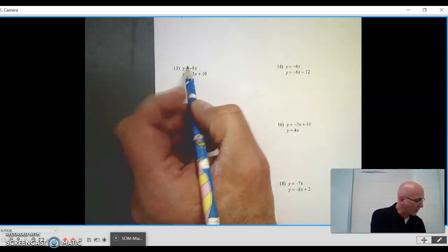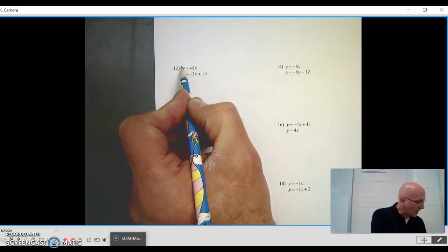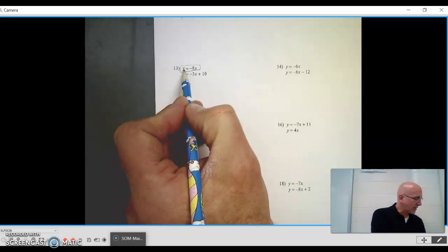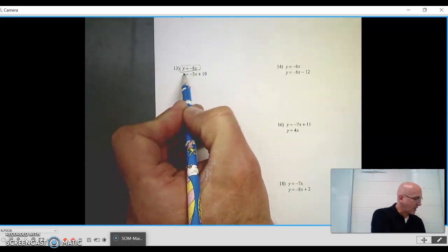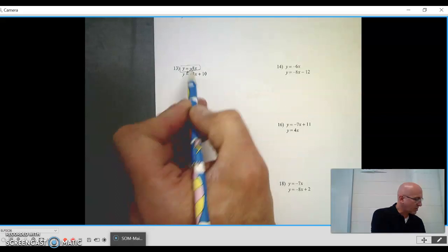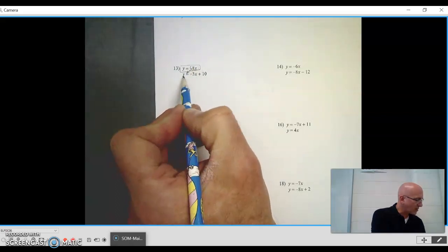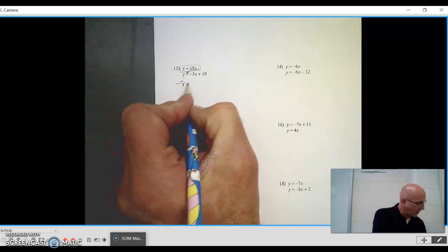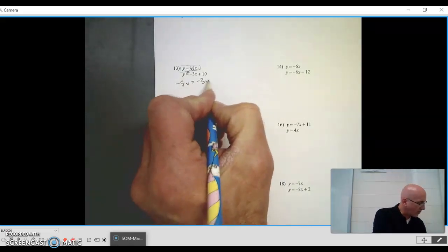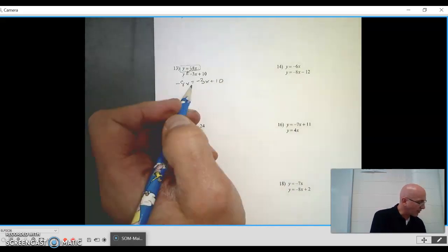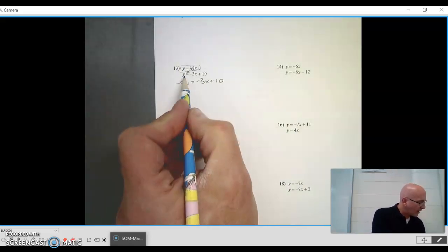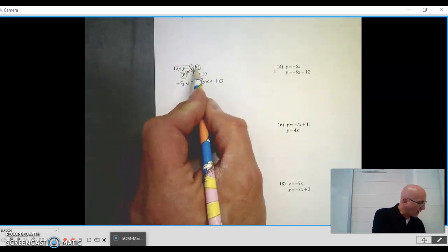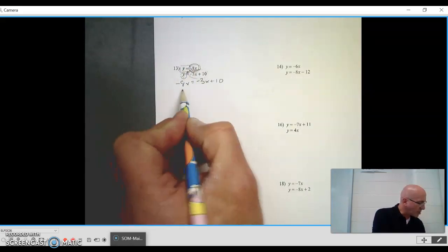I would take this one, y equals negative 8x. So if I say that y is negative 8x, I can substitute this negative 8x for y. So I could rewrite this: negative 8x equals negative 3x plus 10. I simply took this, since these are both equal to y, these are both equal to each other.